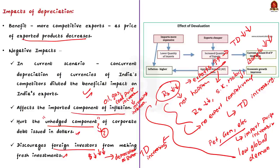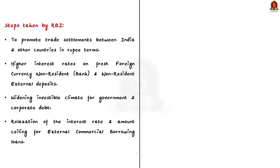To arrest the current depreciation, the RBI has taken some steps. Apart from intervening in the forex market to arrest the fall of the rupee's value, the RBI announced a number of measures to liberalize foreign currency inflows. Now we will see what steps the RBI has taken to prevent rupee depreciation. Firstly, the RBI has promoted trade settlement between India and other countries in rupee terms itself — the classic example being the rupee-ruble route to purchase oil from Russia.